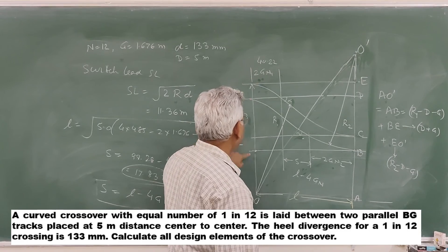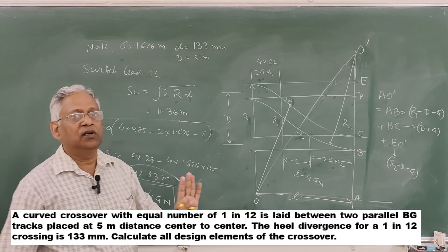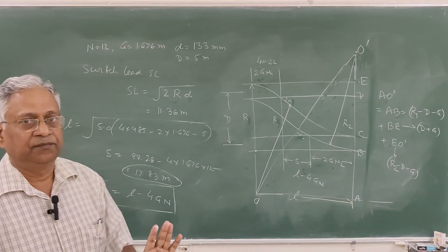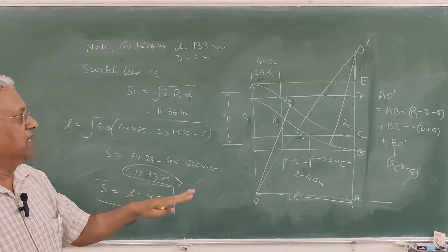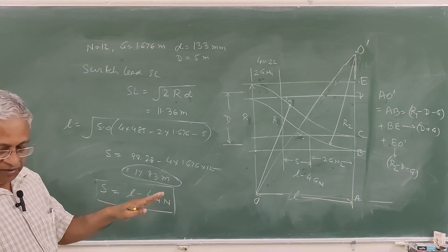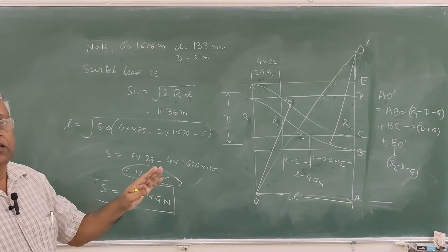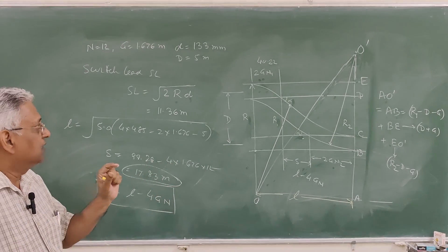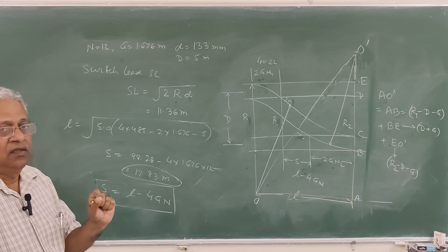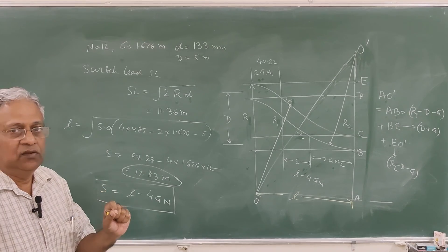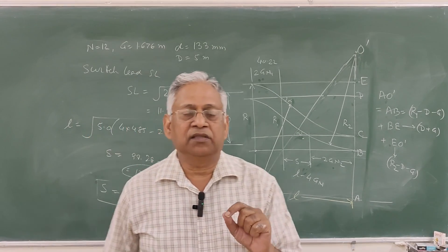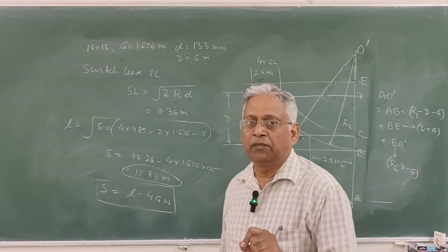These are all the elements of the crossover: overall length L = 98.28 m, intermediate projection S = 17.83 m, curve lead = 40.22 m, and radius = 485 m. With these you can lay the crossover. That is how we design a crossover. Thank you very much for watching this video — you can write your suggestions in the comment box.